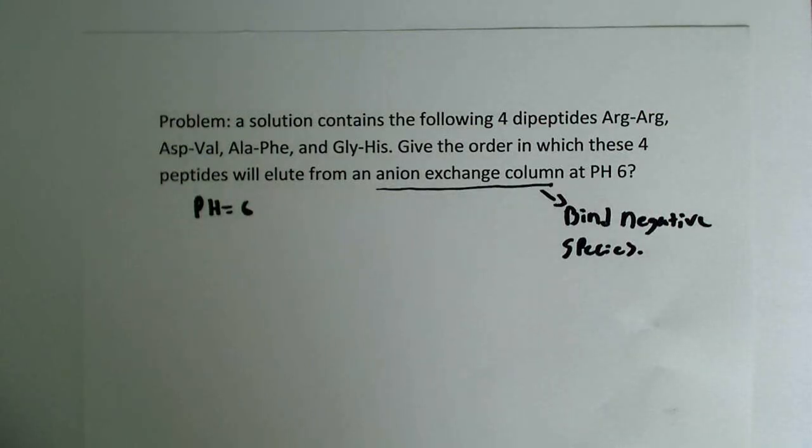So this binds negative species. With that said, the anions are going to be most attracted to it then. Now that we know it binds negative species most, or tightest.